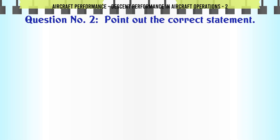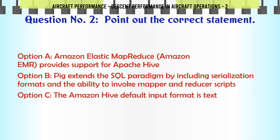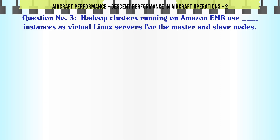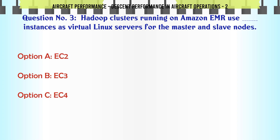Point out the correct statement: a) Amazon Elastic MapReduce (Amazon EMR) provides support for Apache Hive. b) Hive extends the SQL paradigm by including serialization formats and the ability to invoke mapper and reducer scripts. c) The Amazon Hive default input format is text. d) All of the mentioned. The correct answer is: Amazon Elastic MapReduce (Amazon EMR) provides support for Apache Hive.